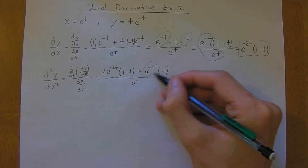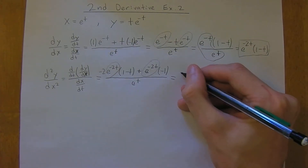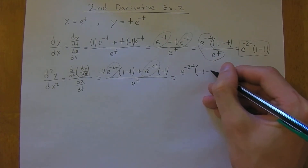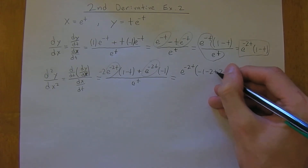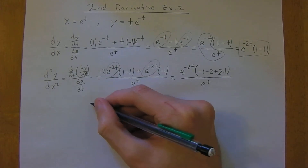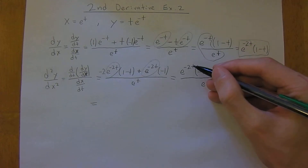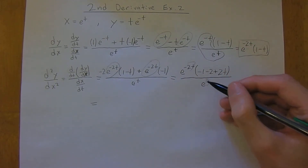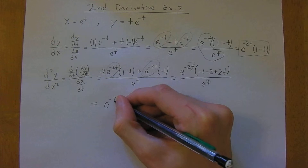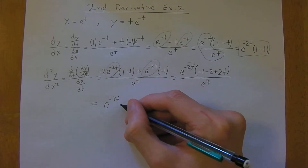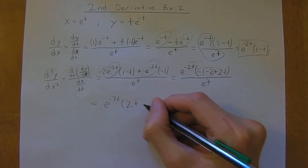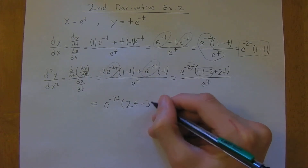We can factor out e to the negative 2t from the numerator. Inside we have negative 2 times (1 minus t) plus negative 1, which gives us negative 1, negative 2, and 2t. All of that over e to the t. When we divide these powers, negative 2t minus t gives negative 3t, so this equals e to the negative 3t times (2t minus 3).